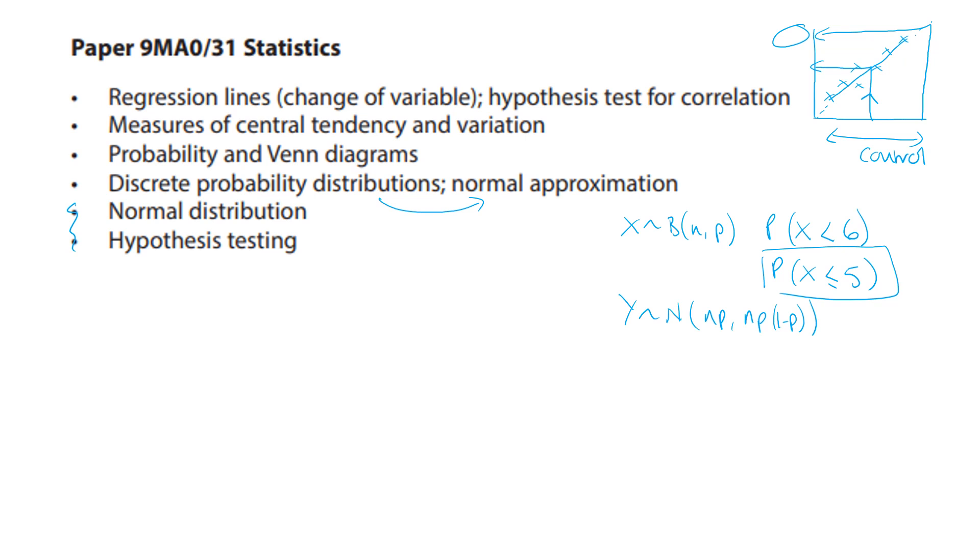Now when you have got the normal approximation and you've done your np and np one minus p, then you've got to think about having this situation from the question and then you'd be calculating and doing a continuity correction. So in order to go from a discrete to a continuous distribution, you always go half above. Once you've got this equals sign in your inequality to do the continuity correction, you just include half more. So because this inequality is going less than, I would be actually doing my continuity correction and calculating y less than or equal to 5.5.